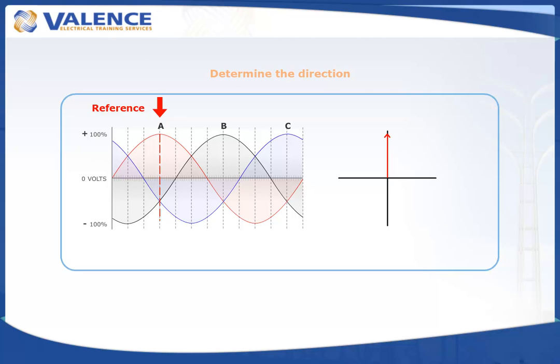We can draw the black waveform using the same method. We start by determining the magnitude of the phasor using the peaks, and then find the direction by drawing a line from the point where the waveform crosses the reference over to the circle. There are two possible angles to draw the black phasor at, and choosing the right angle requires a little imagination.